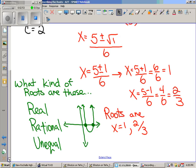Take a look. We've got x equals five plus or minus one over six, and these are the roots. The roots are one and two-thirds. How would you describe that? Well, one and two-thirds are certainly real numbers, certainly rational. Rational means can be expressed as a fraction, and they're unequal. They're two different roots.